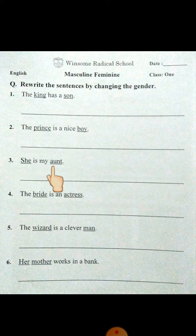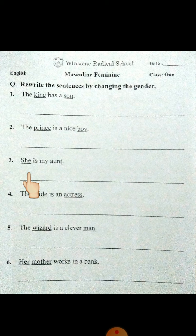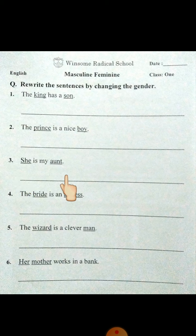Number three: 'She is my aunt.' The masculine of she is he. The masculine of aunt is uncle. Now you have to write this sentence as: 'He is my uncle.'